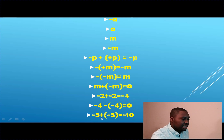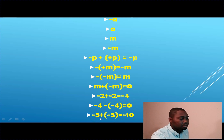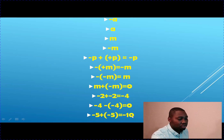Another example: negative 5 plus negative 5 equals negative 10. You owe me 5 dollars last week and another 5 dollars this week — that means you owe me 10 dollars total.